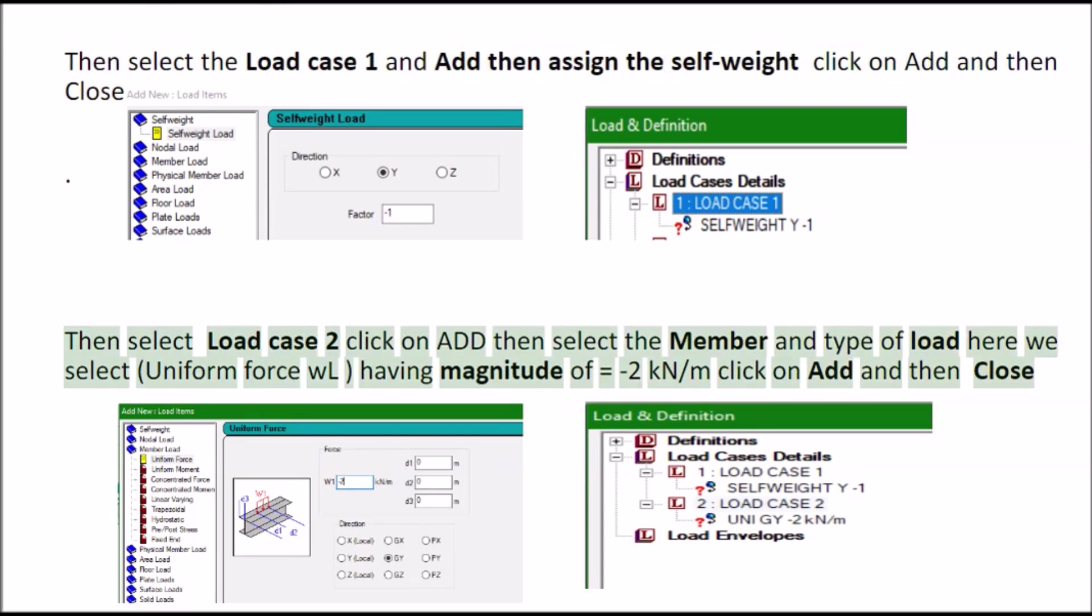Then select load case 2 click on add then select the member and type of load here we select uniform force WL having magnitude of equals 2 KN slash M click on add and then close.